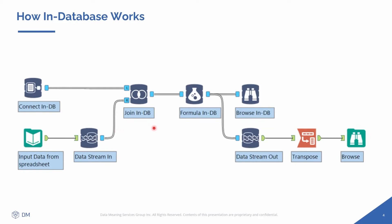If you were to download all of this to your computer, it would take a huge amount of time to download and then to process the join. But if you just stream in this data into your database and perform the join there rather than on your local machine, it will improve the process so much. Here I also have a formula, so I'm doing some calculations and creating some new fields.